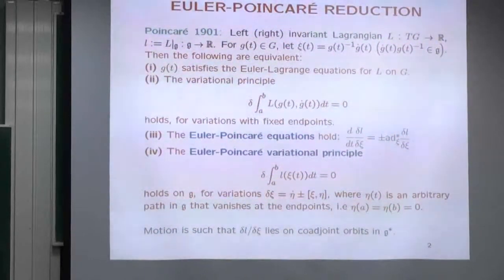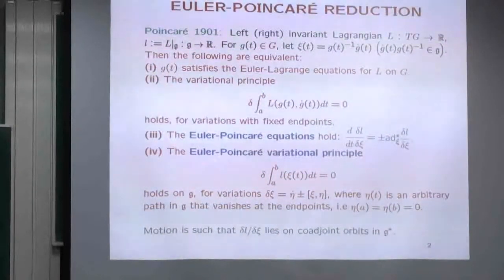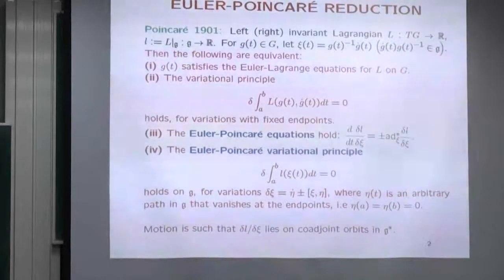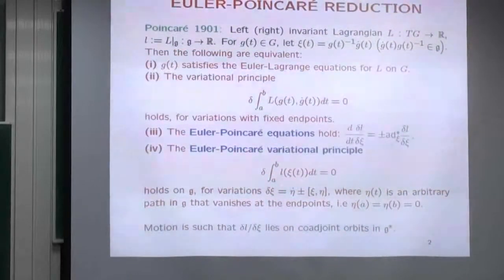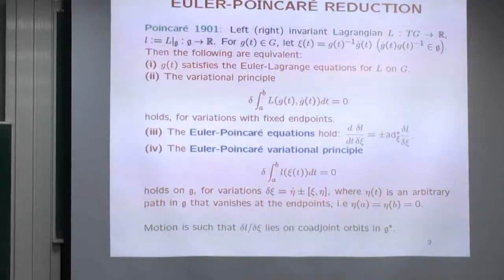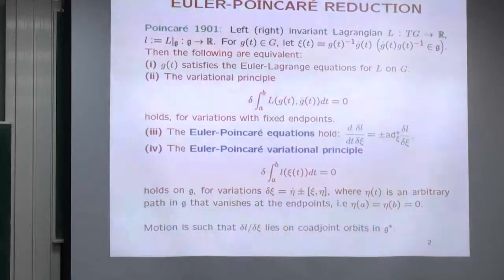Or the Euler-Poincaré variational principle holds: δ∫_a^b L(ξ(t)) dt = 0, for variations of a very special type δξ = η̇ ± [ξ, η], where η(t) is an arbitrary path in the Lie algebra that vanishes at the endpoints. Now, one is equivalent to two — Hamilton knew this, nothing to prove. Three is equivalent to four: take the derivative, get ∂L/∂ξ · δξ, replace δξ, integrate by parts, and since η is arbitrary and vanishes at the endpoints as in calculus of variations, the other factor is zero.